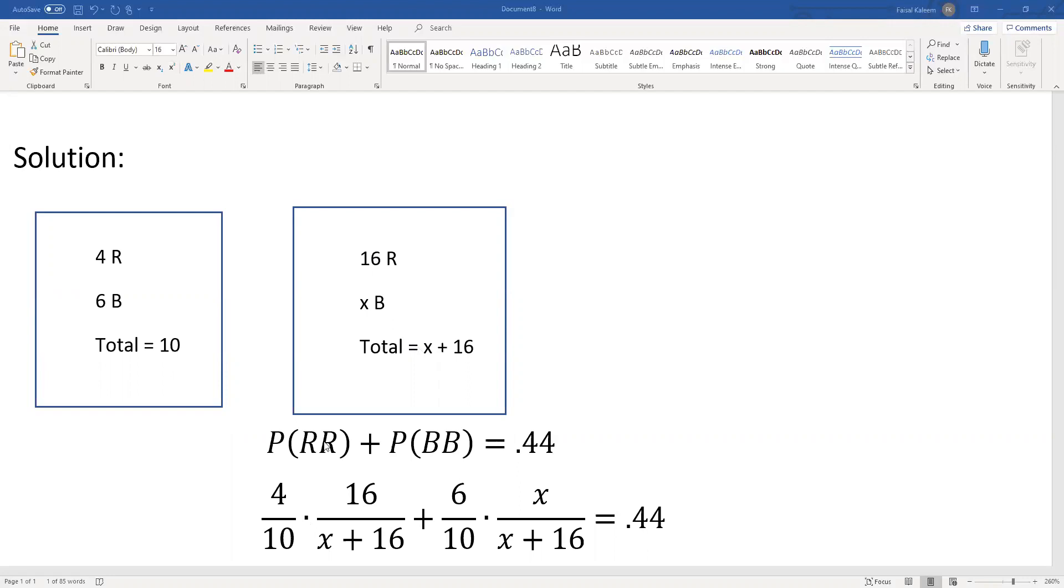So this one was same color could be red, red or blue, blue. That's why these two got added. And then red red means red and red. So 4 out of 10 times 16 out of x plus 16.